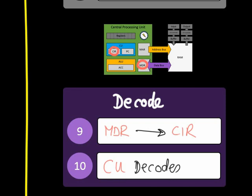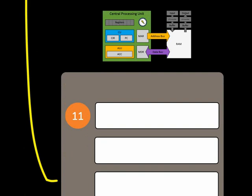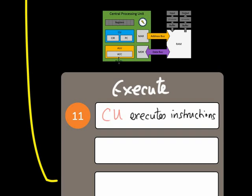Until we get to the execute part, which is quite long — there are quite a lot of sections in it. The first thing that happens is the control unit executes the instruction — it carries it out. Carrying out that instruction involves creating physical execution pathways through the electronics in the chip. That's what executing means in this context — switching things on and off to get the right circuit paths so that the maths can be done, decisions can be made, and all that sort of stuff.